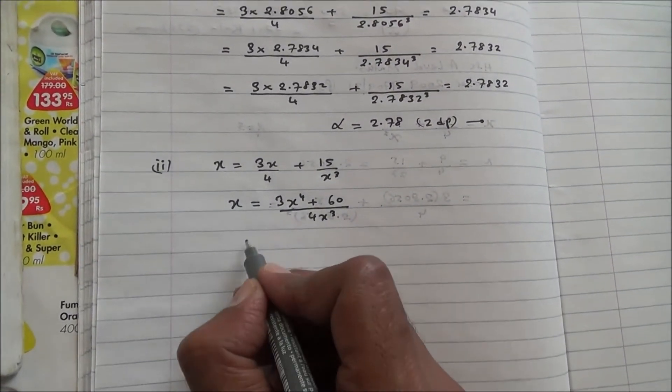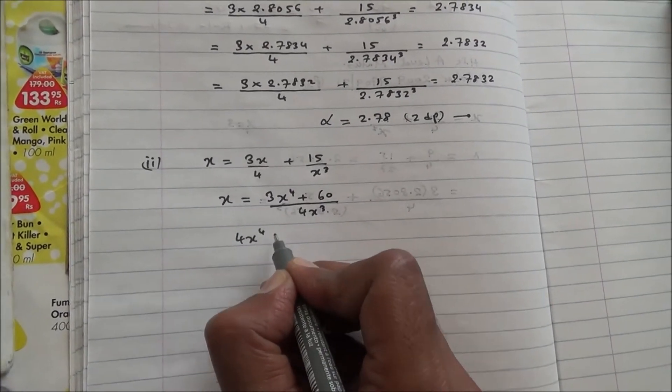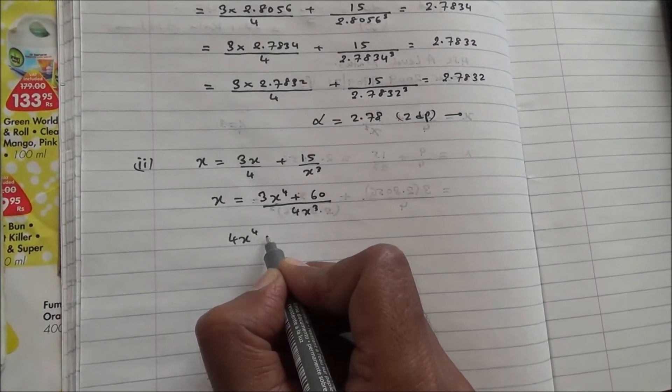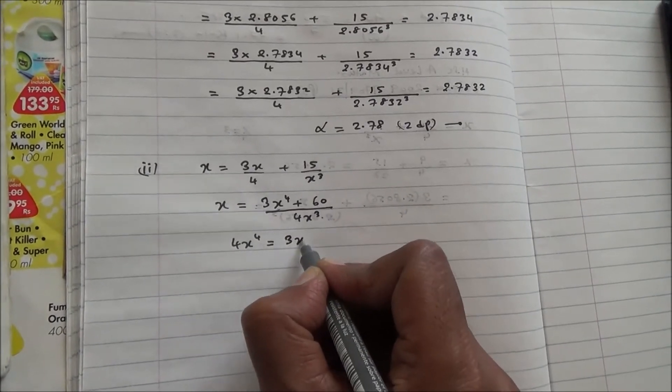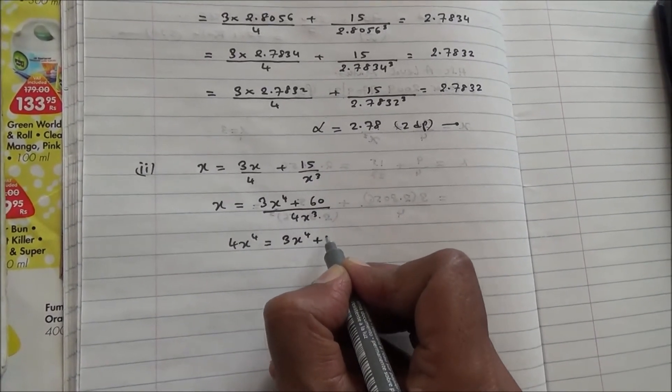So therefore this can come on this side. It becomes 4x power 4 is equal to 3x power 4 plus 60.